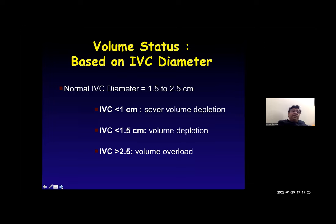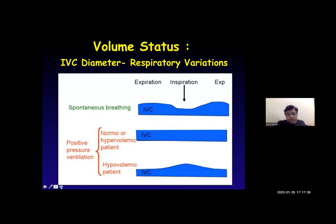The normal IVC diameter varies from 1.5 to 2.5 centimeters. If the IVC diameter is less than 1 centimeter, the patient is severely volume depleted. If IVC is less than 1.5 centimeters, it indicates volume depletion. If IVC is greater than 2.5 centimeters, the patient is in volume overload. The IVC varies with respiration: in a spontaneously breathing patient, IVC diameter is smaller during inspiration. With positive pressure ventilation, in a normovolemic or hypervolemic patient there is no variation.